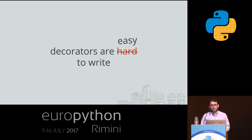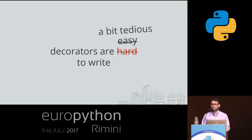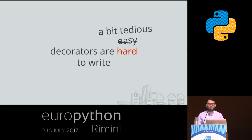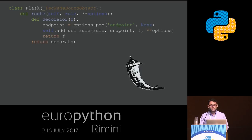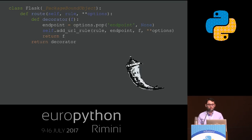With that in mind, my stance on decorators is that they're neither easy nor hard — they're just a bit tedious to write, with quite a few corner cases to remember. But once you know how to write them and have these three examples in front of you, it doesn't take much time. In fact, if we look at the Flask framework, this is the way they implement their decorator, which is not much different from what we saw before, and much simpler than the other frameworks.